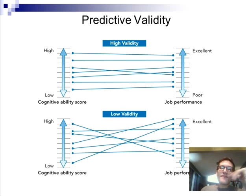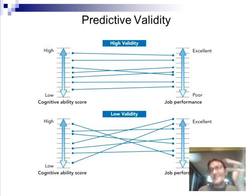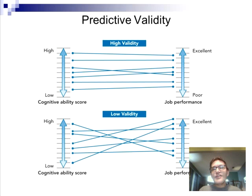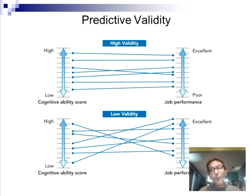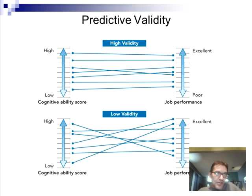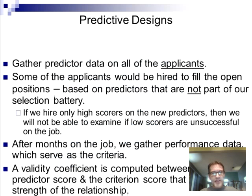Why is this important? If you are the head of human resources and you've given a job applicant a cognitive ability test — an IQ test — it costs you money and time. But if it doesn't help you predict job performance, then why did you waste that time and money giving that test? If you do not have predictive validity, you're just wasting your money and your time. We will absolutely come back to this in huge detail in later chapters.